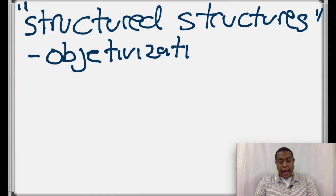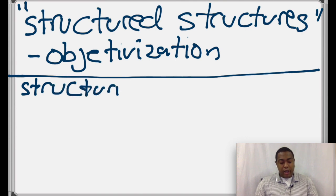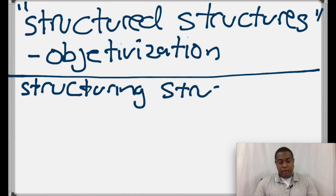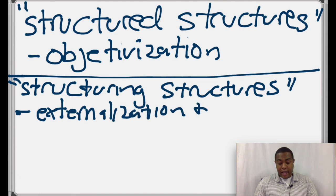And by this, he means, I think, something akin to what we talked about with structures and Peter Berger, objectivization. That notion that the world is objectively, outside of ourselves, just this way. And Bourdieu is saying, what are the mechanisms and processes in society that make the world appear that way? So there are structured structures.